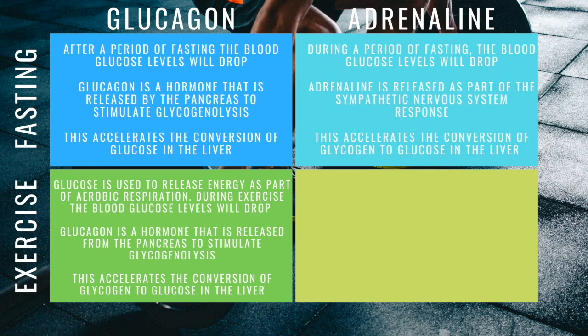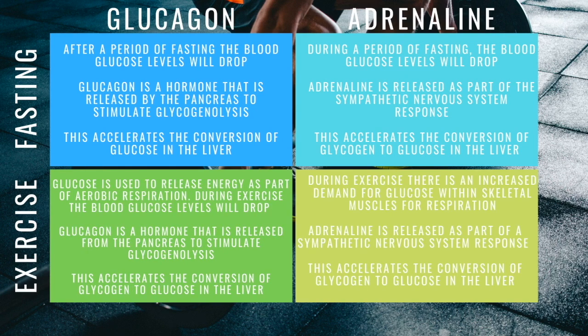Adrenaline, during a period of fasting, also responds to dropping blood glucose levels. Adrenaline is released as part of the sympathetic nervous system and also accelerates the conversion of glycogen to glucose in the liver — a similar job to glucagon. During exercise, there is an increased demand for glucose within skeletal muscles for respiration; adrenaline is released and accelerates the conversion of glycogen to glucose in the liver. These responses are quite repetitive, but your question might be glucagon and fasting, glucagon and exercise, adrenaline and fasting, or comparing them, so pause the video and jot this down for a three-levelled answer for any one of those four combinations.